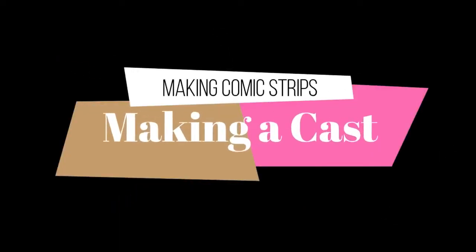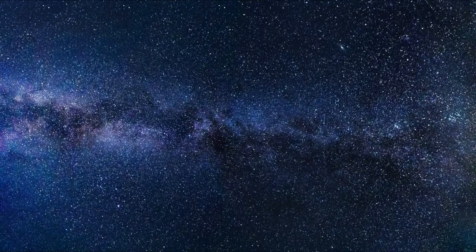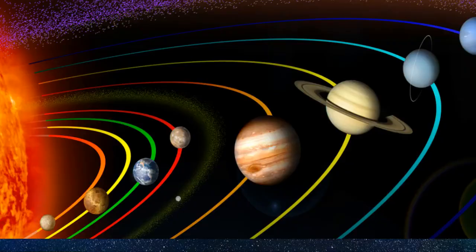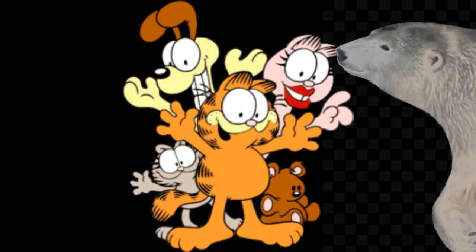First up, let's talk about your cast. You can make a comic about literally anything in the universe, but it will help your readers if you use a collection of things that they're already familiar with. For example, the strip Garfield is about cats and his household animal friends. Readers would get really confused if Garfield spent some time talking to a polar bear, because people don't normally see polar bears interacting with house pets.